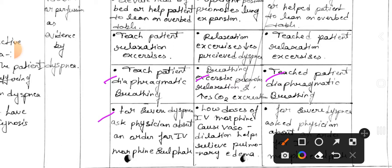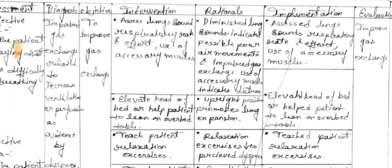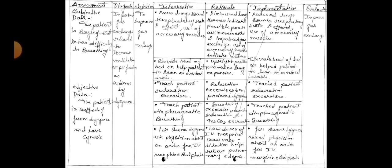Ask physician about an order for IV morphine sulfate. Rational: low dose IV morphine causes vasodilation and helps relieve pulmonary edema. Implementation: ask physician about an order for IV morphine sulfate. Evaluation: improved gas exchange — the goal is to improve gas exchange. This was the first care plan.